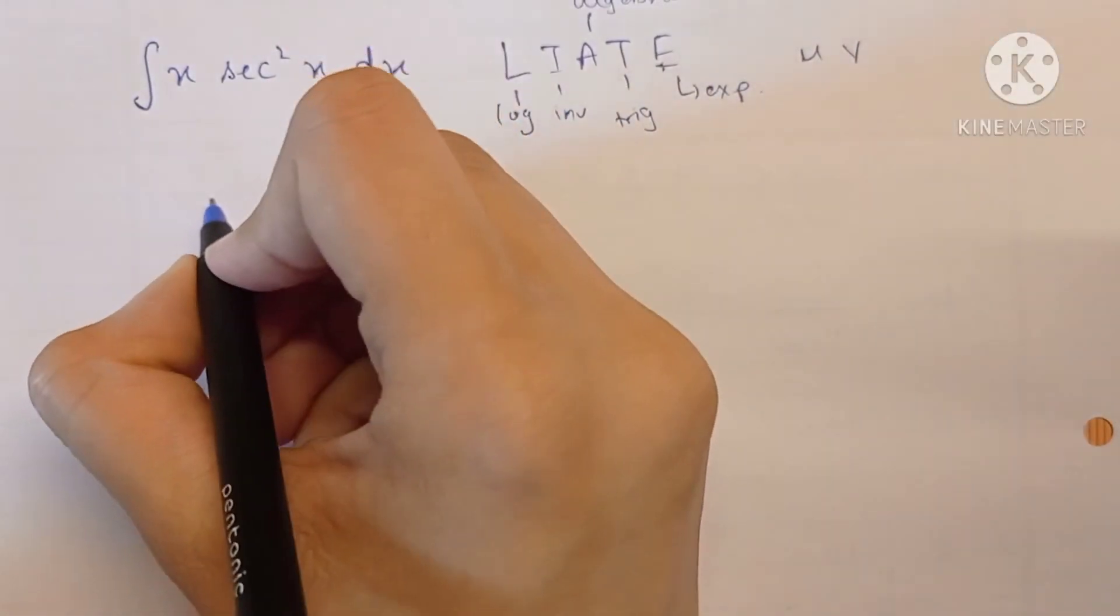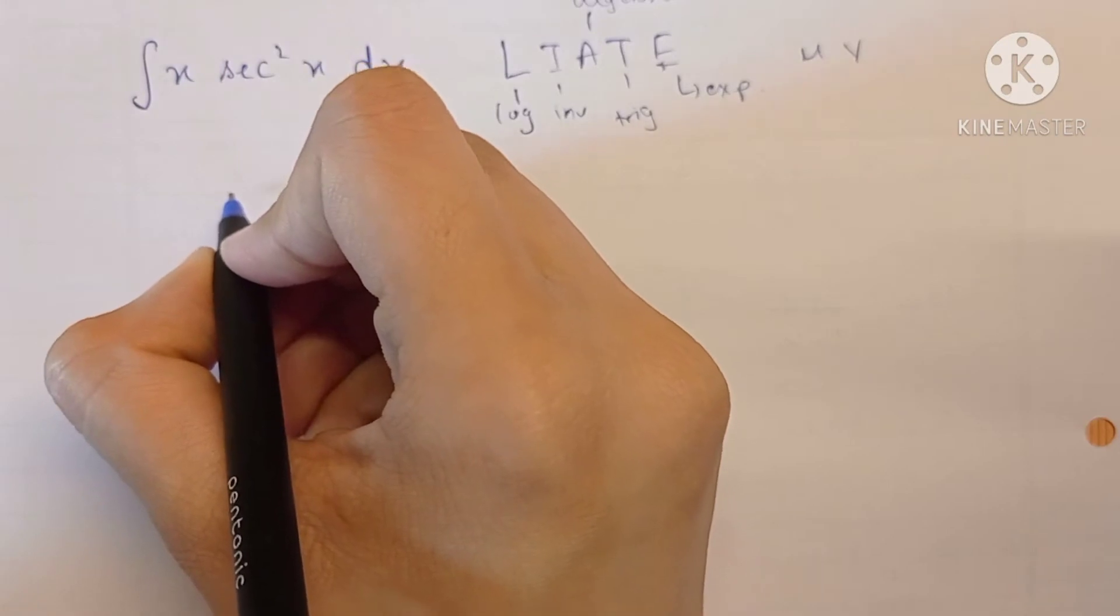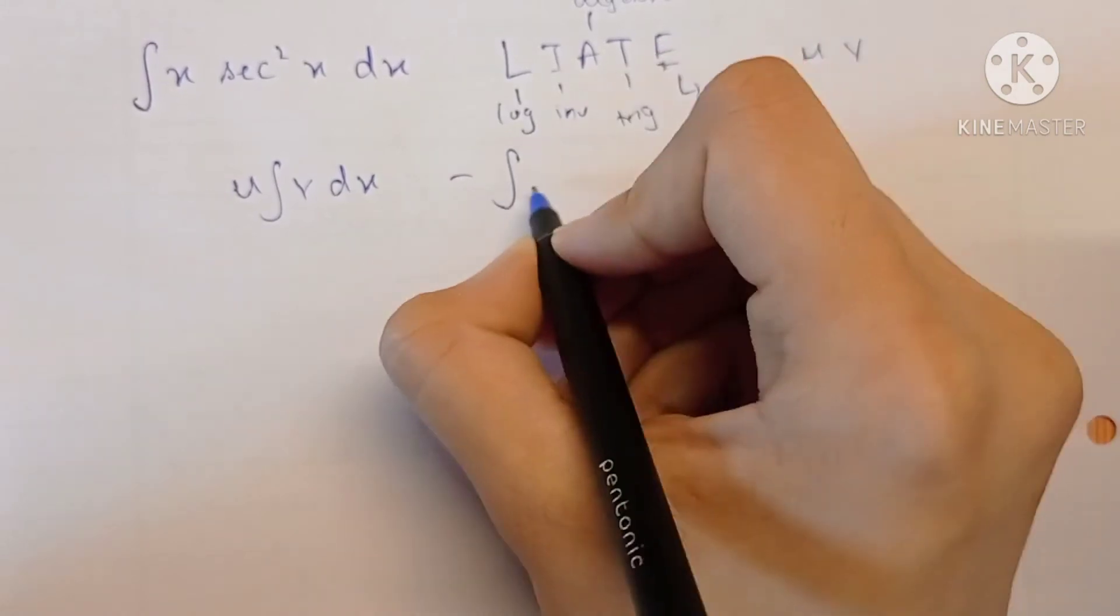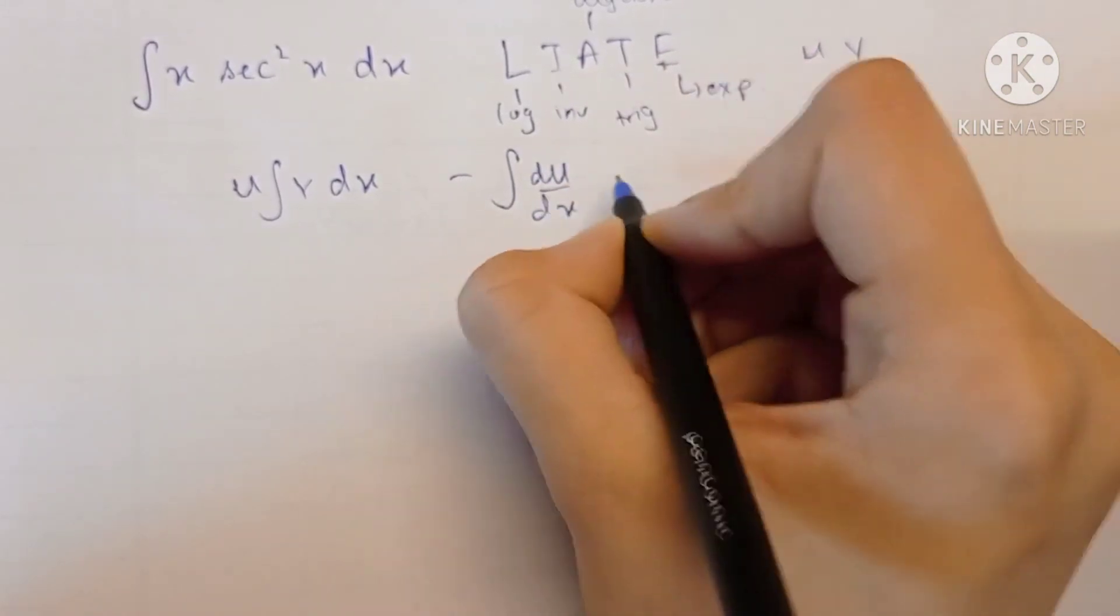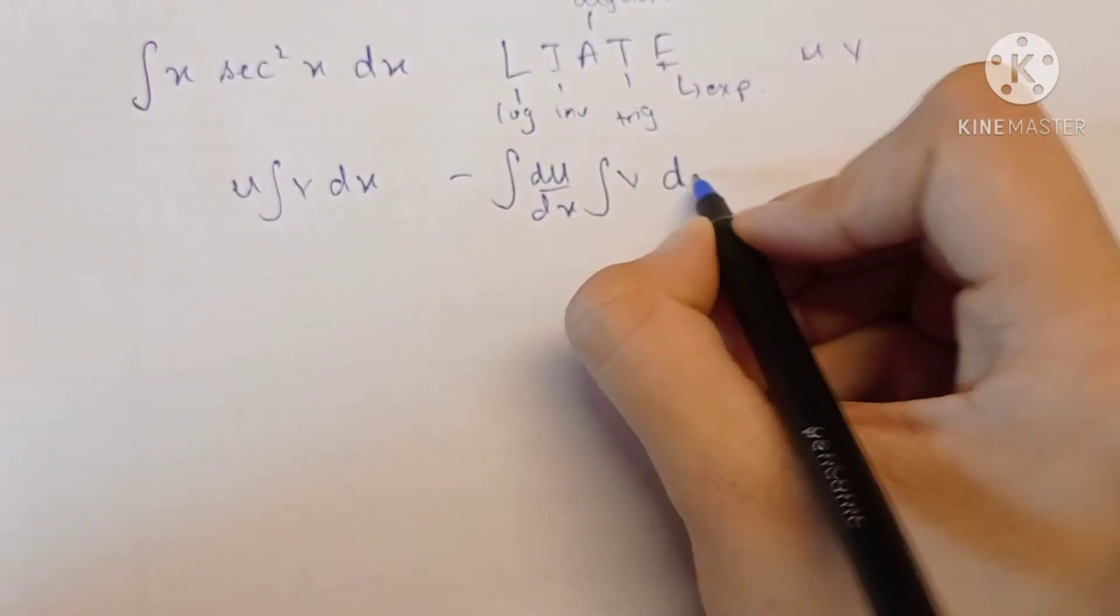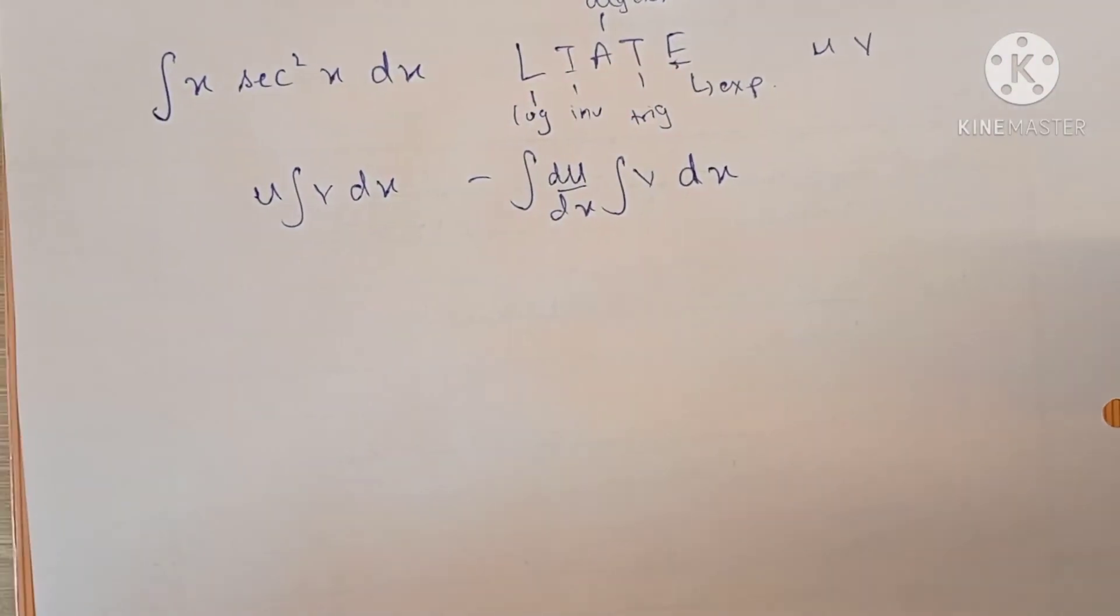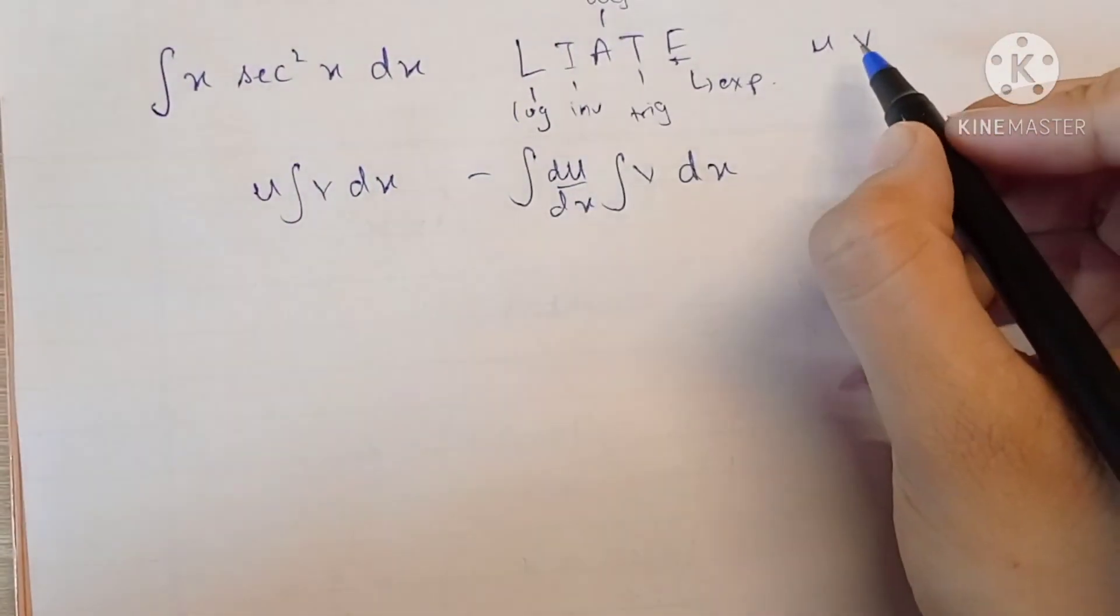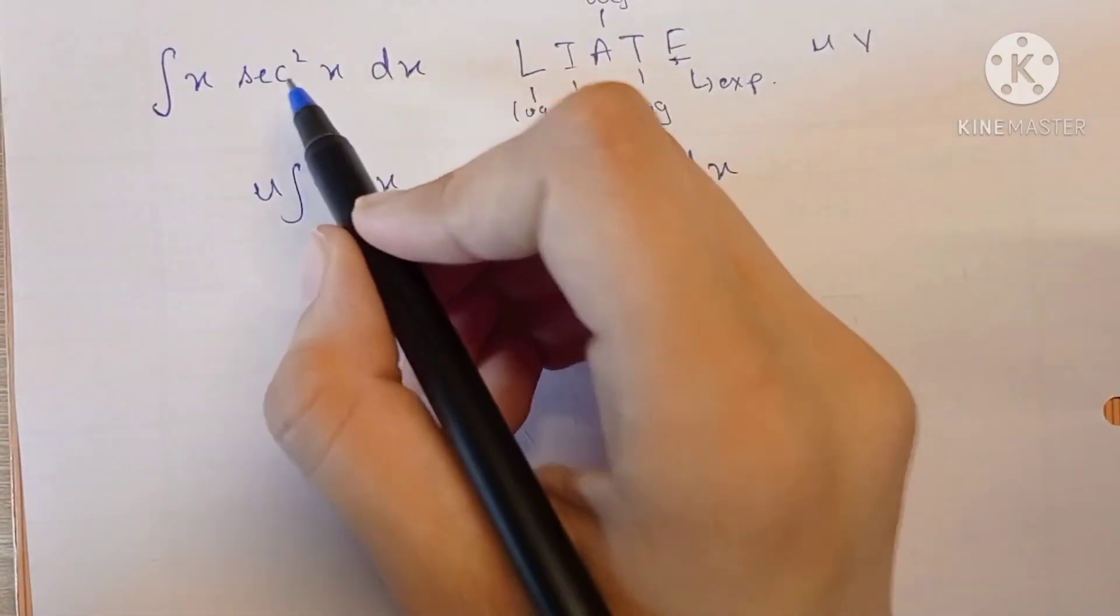Because we know that the integration by parts formula is u into integration of v minus the integration of du by dx into the integration of v. So depending on which one is easier to integrate and which one is easier to differentiate, we set u and v.